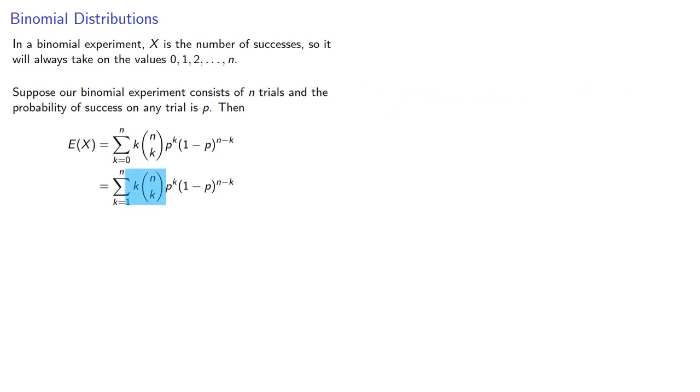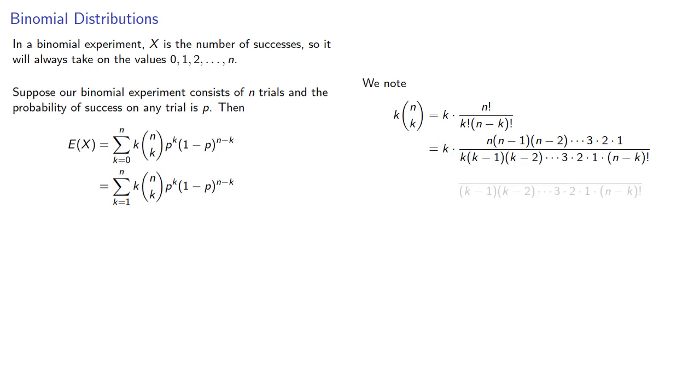Next, let's consider k with the product of this binomial coefficient. We note that k times n choose k, let's write that out. That's k n factorial divided by k factorial times n minus k factorial. And if we write out our factorials, an interesting thing happens. And so we'll do two things. First of all, we can remove this common factor of k. And second, we can remove this factor of n outside of our product.